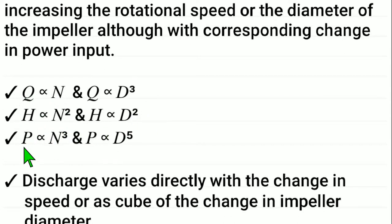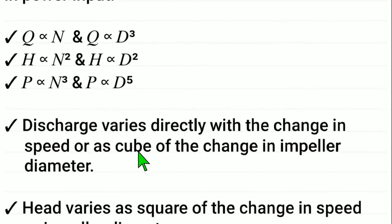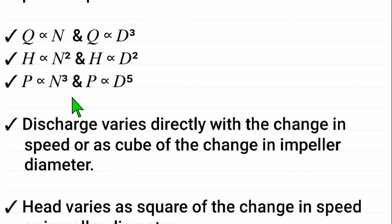P proportional to N cubed and P proportional to D to the power 5. That means power is proportional to speed cubed and power is proportional to diameter to the fifth power. So discharge varies directly with the change in speed or as cube of the change in impeller diameter.